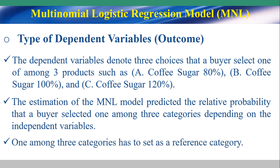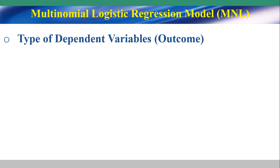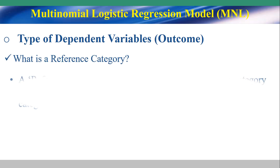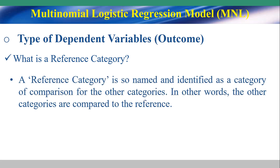One among the three categories has to be set as a reference category. What is a reference category? A reference category is identified as the category of comparison for the other categories. In other words, the other categories are compared to the reference.